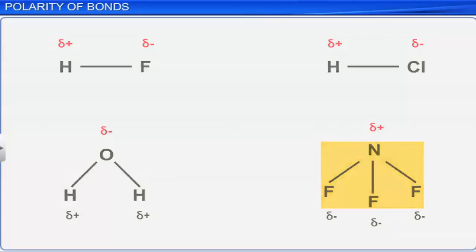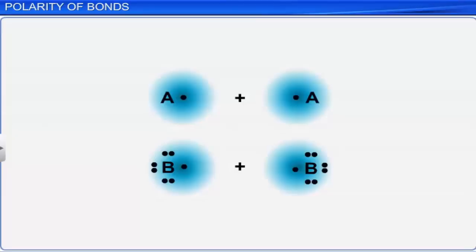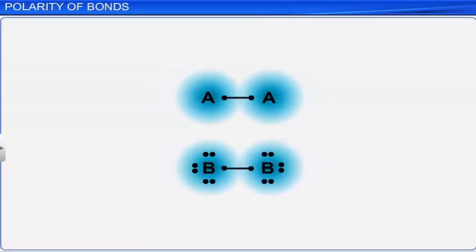When atoms with the same electronegativity combine together to form a covalent bond, such a bond is said to be a non-polar covalent bond. Here, no polarity is developed in the molecule as the shared electron pair lies exactly between the bonded atoms. Molecules with non-polar covalent bonds are called non-polar covalent molecules.